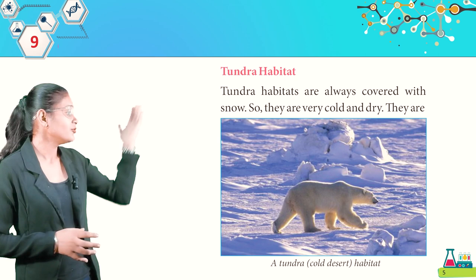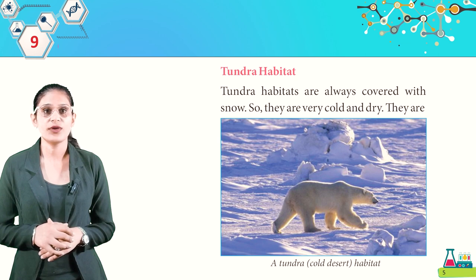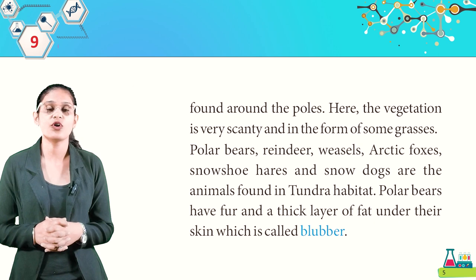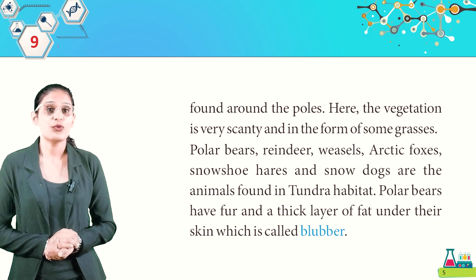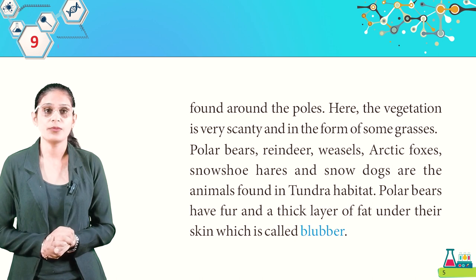Tundra habitats are always covered with snow, so they are very cold and dry. Vegetation is very scanty, in the form of some grasses. Polar bears, reindeer, weasels, arctic foxes, snowshoe hares, and snow dogs are animals found in tundra habitat. Polar bears have a thick layer of fat under their skin called blubber.